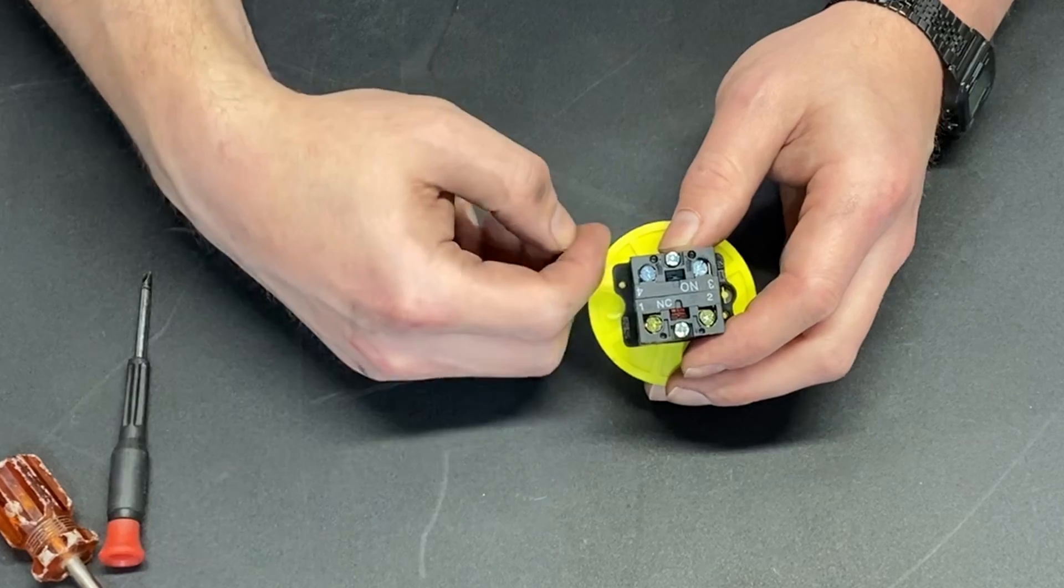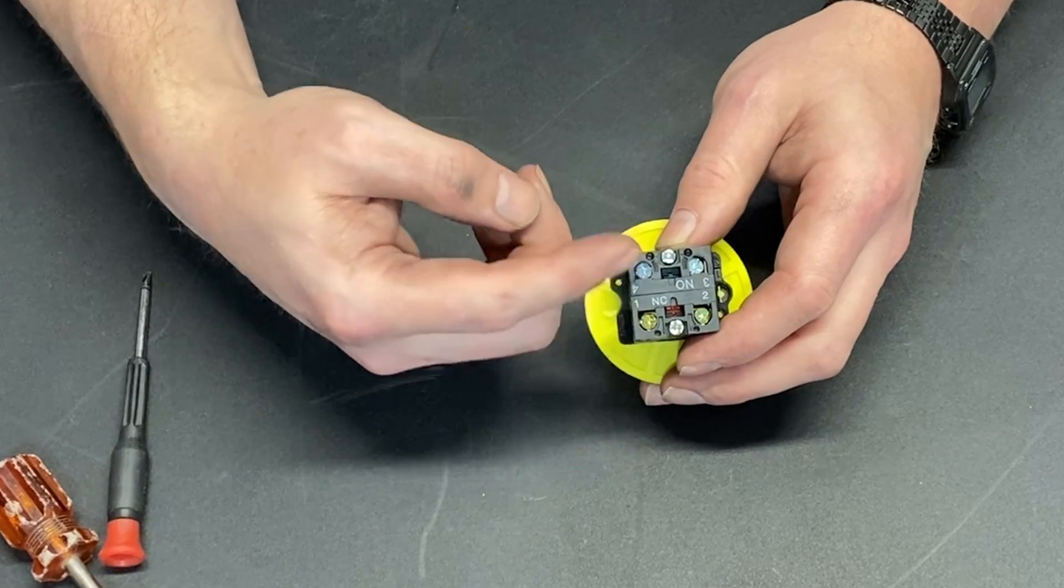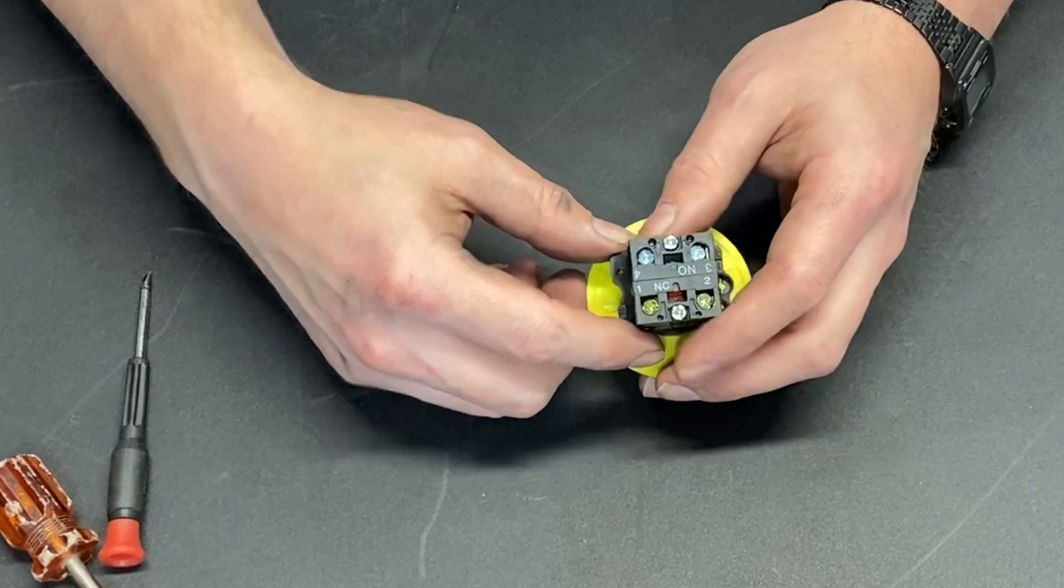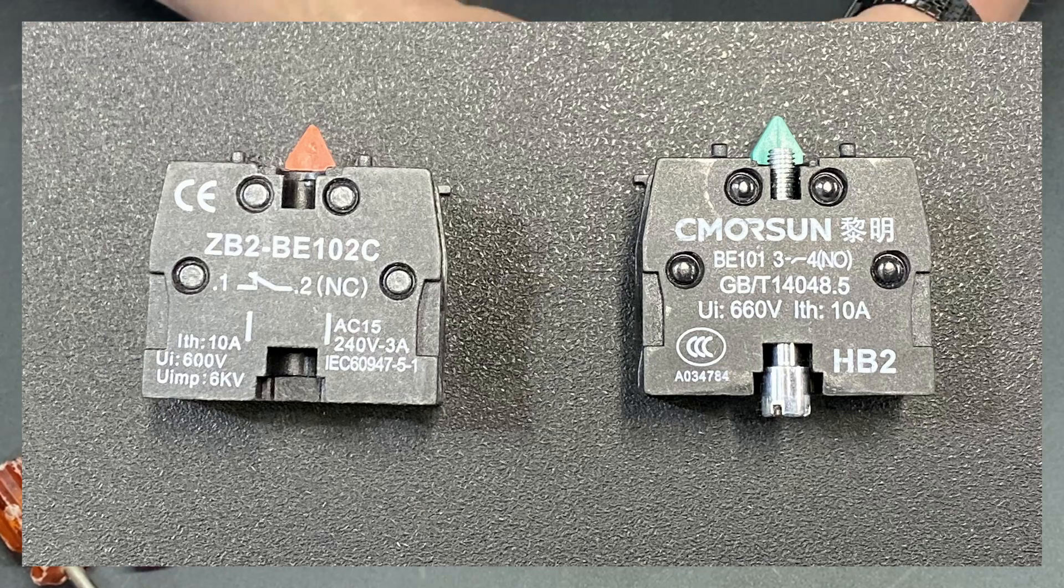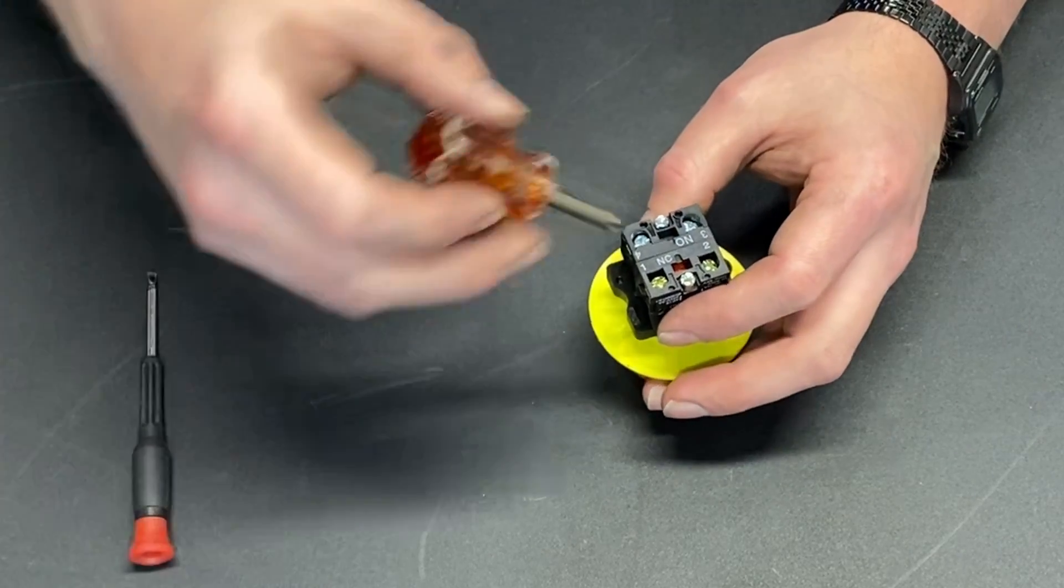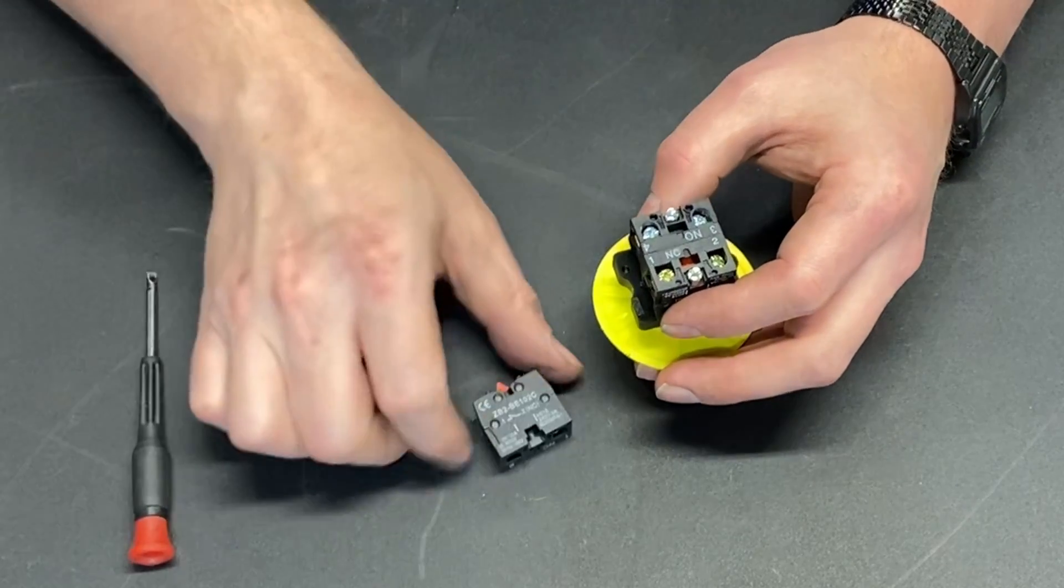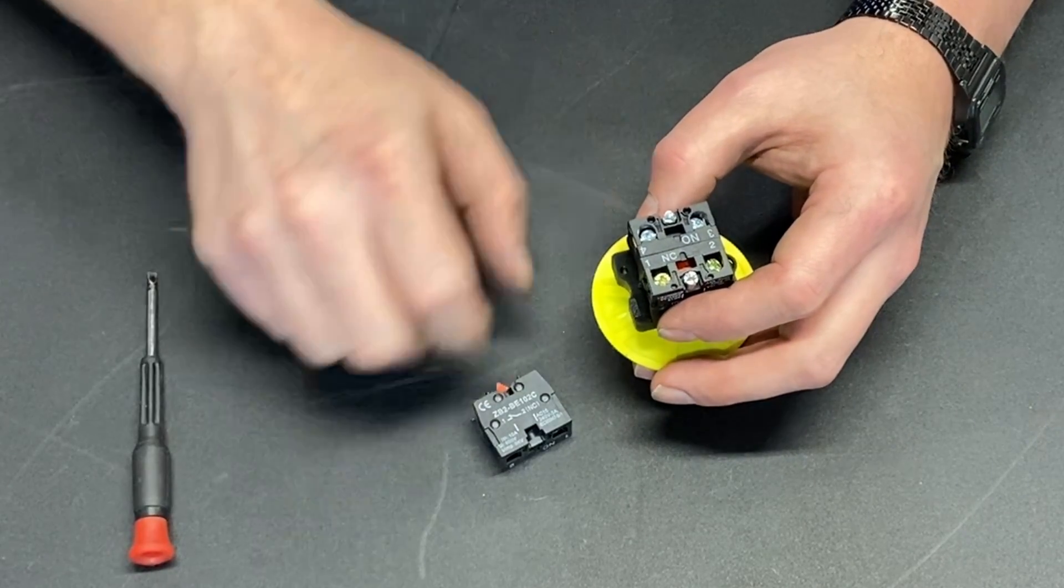Now, I didn't want that. I did not want to have one closed and one open. So what I did is did a little Google search with the numbers on the side of the switch. I knew that the switches were individual pieces from taking the thing apart and discovered that I could order more switches.